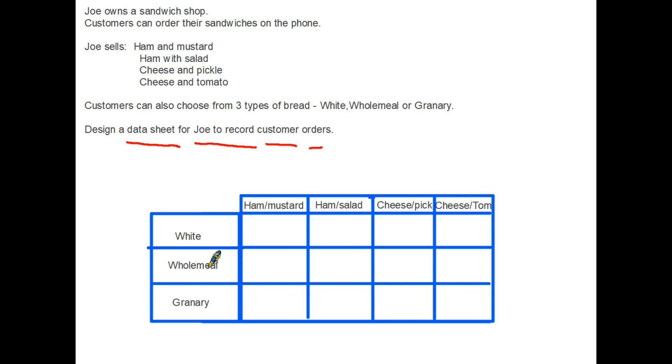So all he would do as an order came in, let's say the first phone call was somebody who wanted a ham salad on white, he would then put that in the appropriate box. The next one may be a cheese and tomato sandwich which they want on wholemeal, so he would complete that. So he can simply input the information as the calls come in.